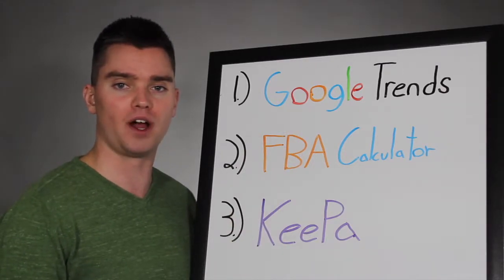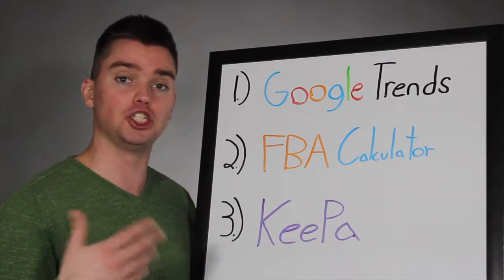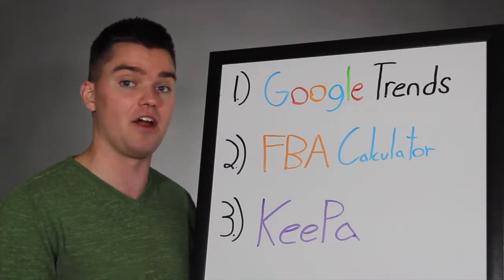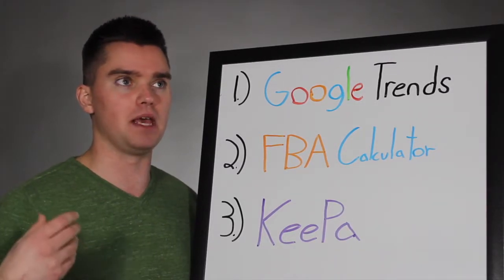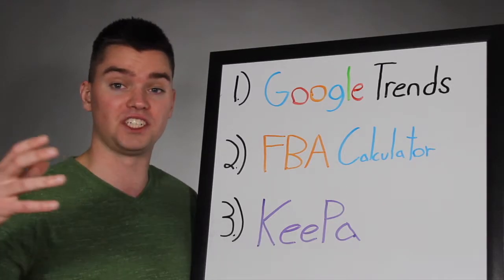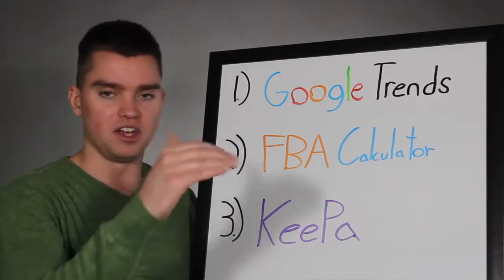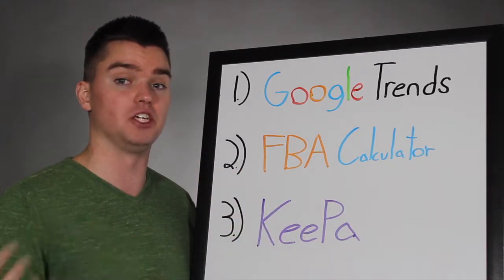So the first tool we have here is Google Trends. Google Trends essentially shows you what people are typing into Google over time for specific areas. For example, you could find what people in a specific country or state are typing into Google or YouTube or other search partners that they have, and you can see the general volume in terms of interest.